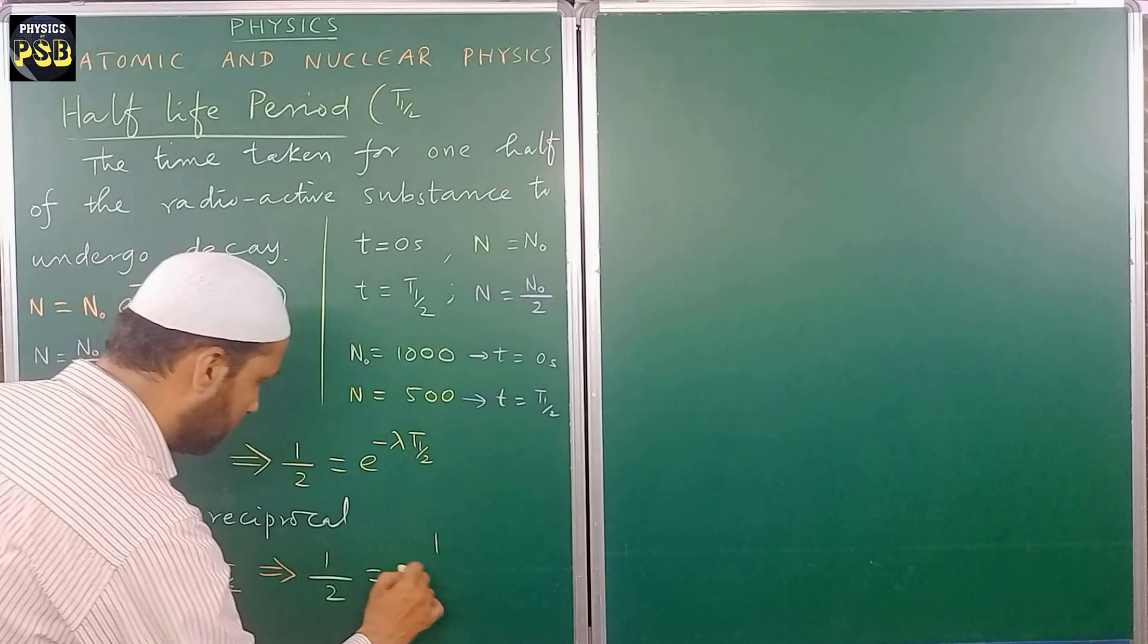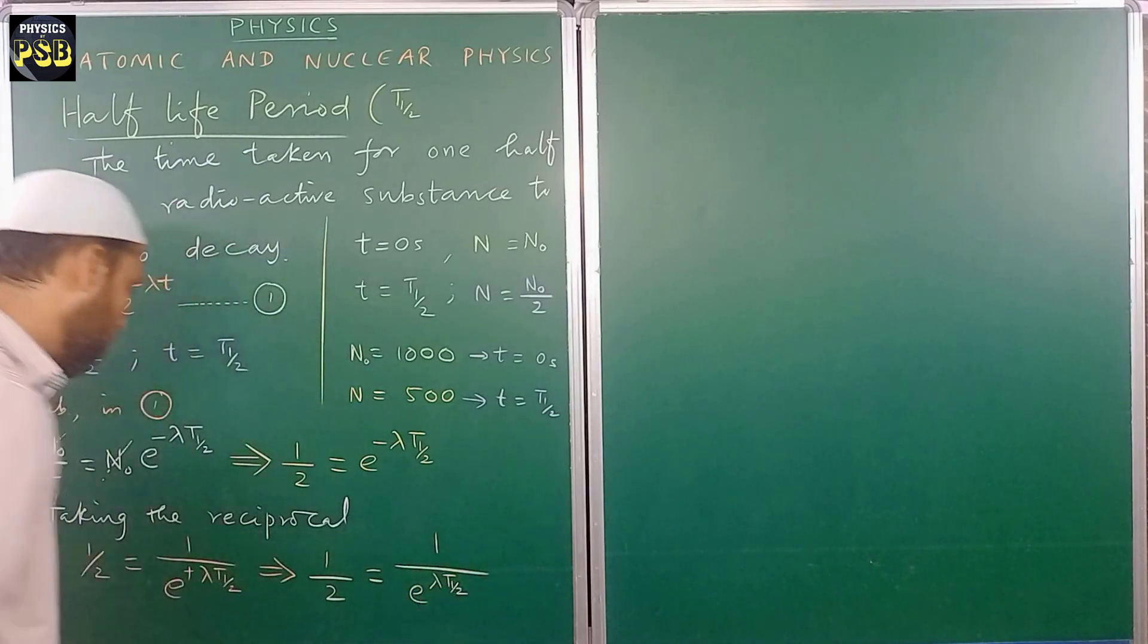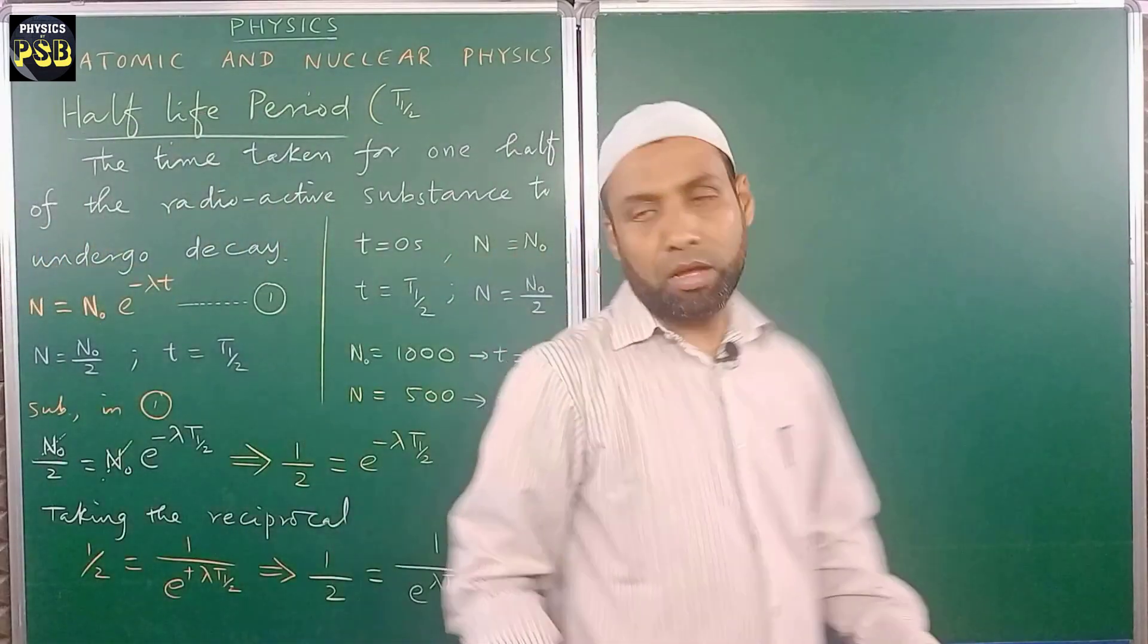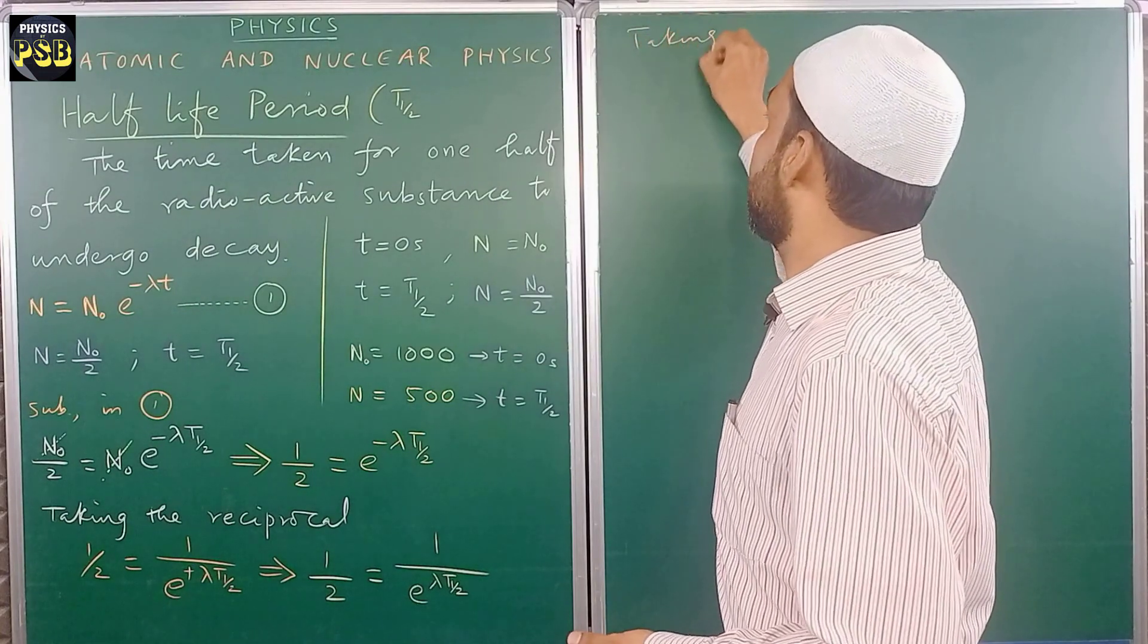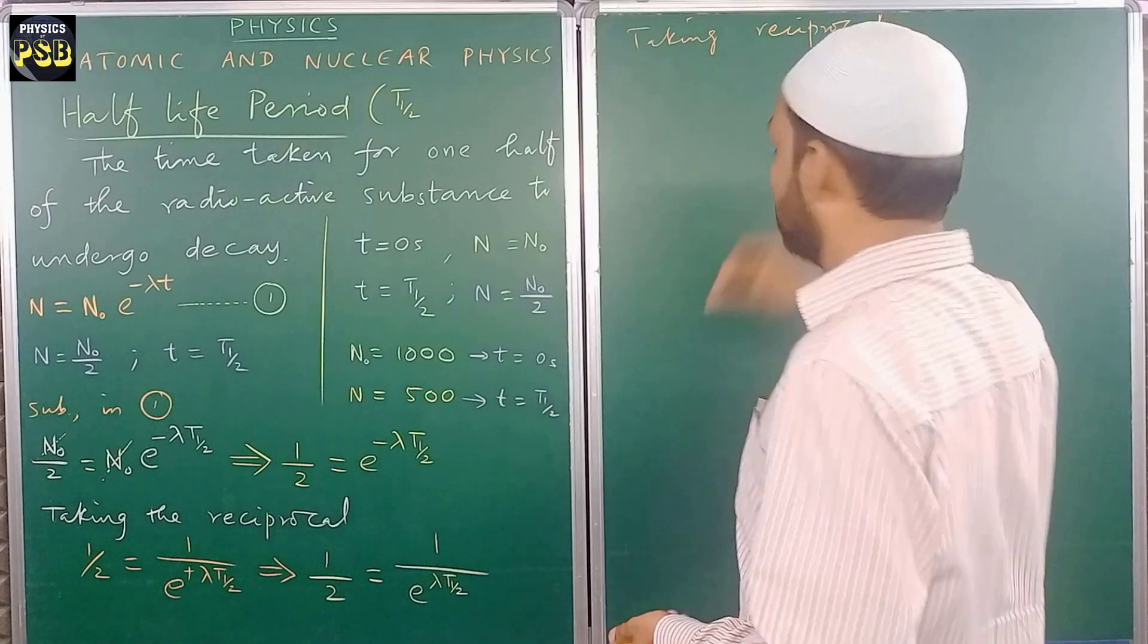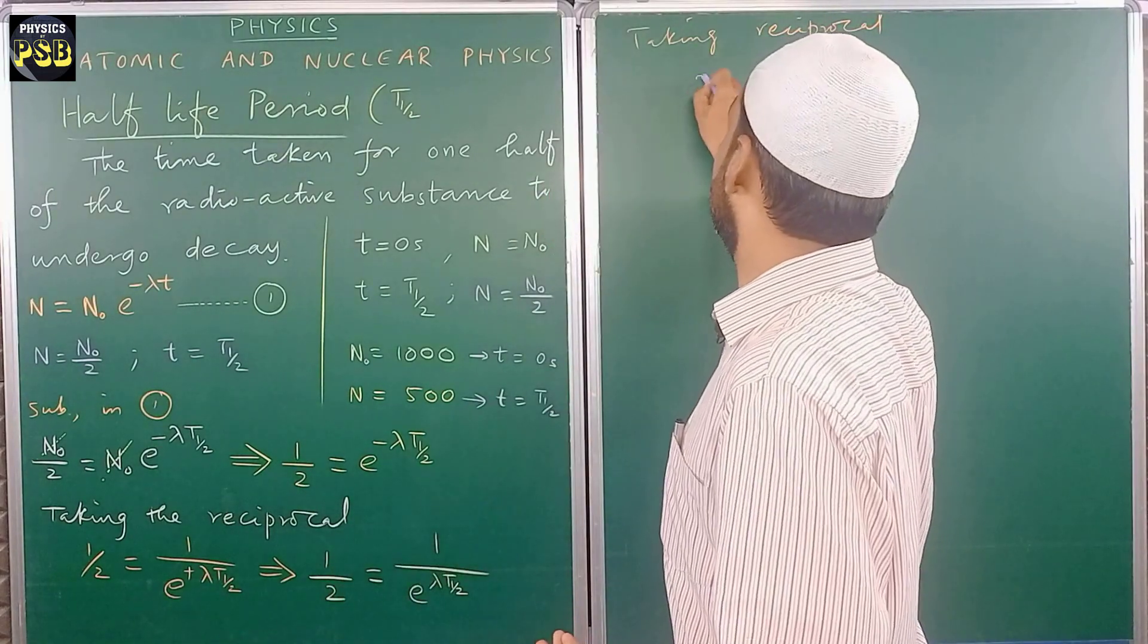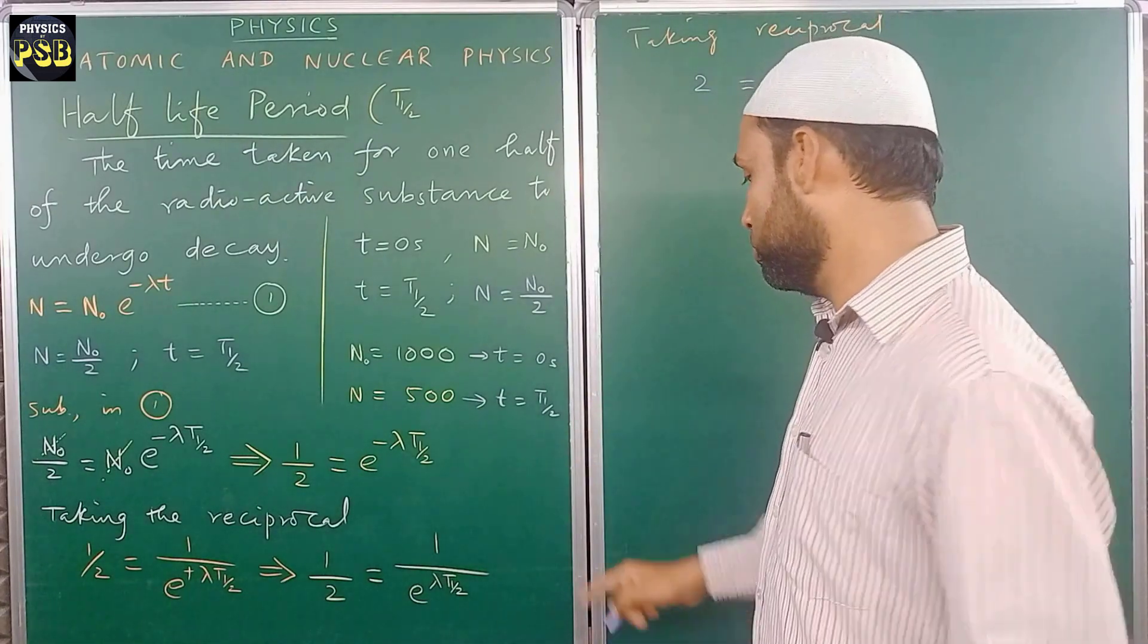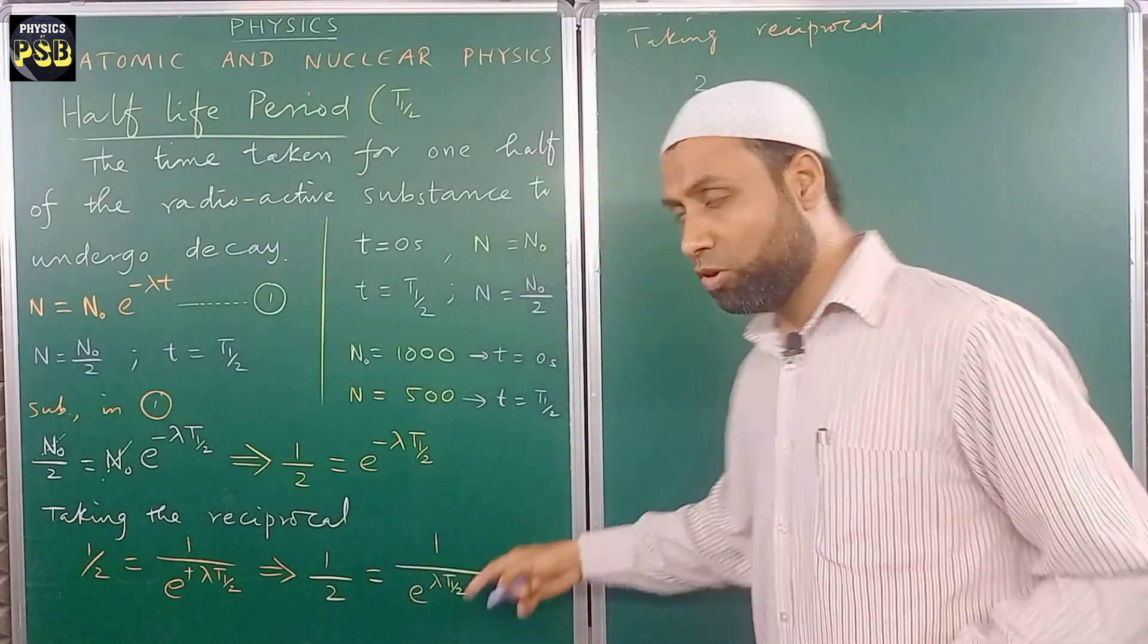The next term, like this, once again e to the power lambda t half. Now I take the reciprocal of this equation. So here 1/2 becomes 2.